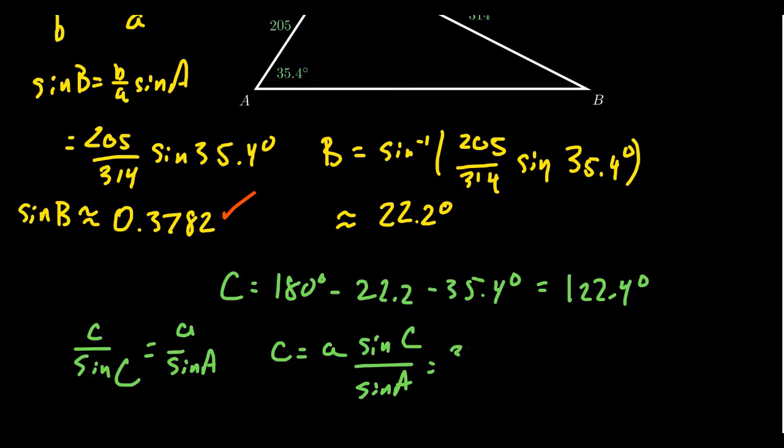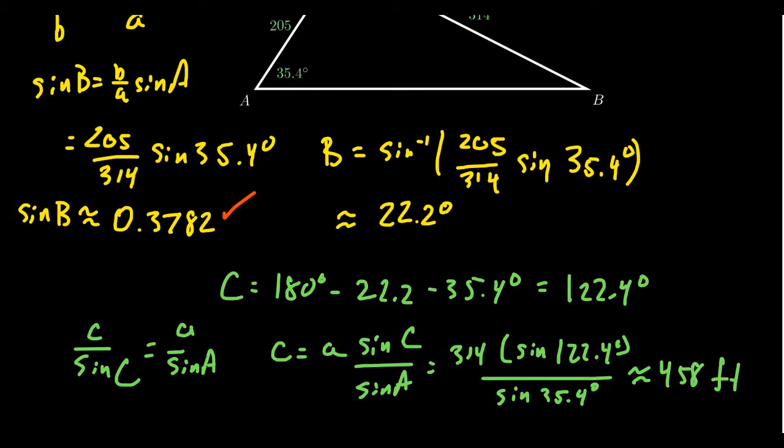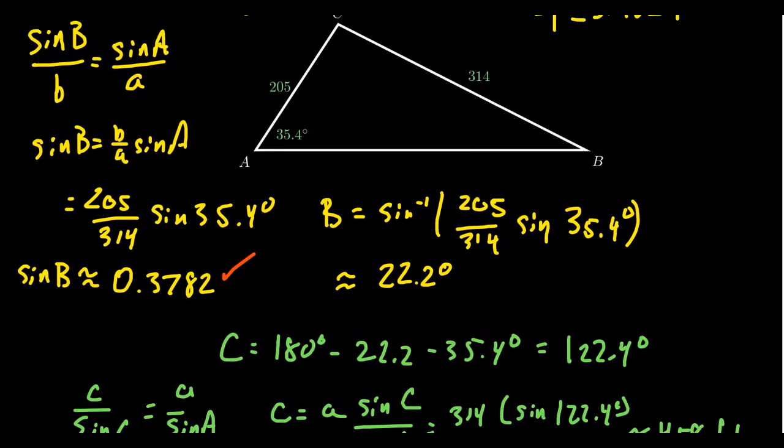Little a was 314, sine of C is sine of 122.4 degrees, and we divide that by sine of 35.4 degrees. Put all of this into our calculator, and approximately we get 458 feet for little c.